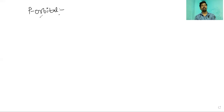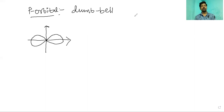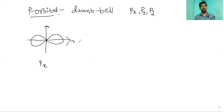The P orbital has a dumbbell shape. The electron density is concentrated along the axes — x-axis, y-axis, and z-axis — giving the dumbbell shape. There are three types of P orbitals: PX, PY, and PZ. These are degenerate orbitals, meaning they have equal energy. For PX, the electron density is concentrated along the x-axis.